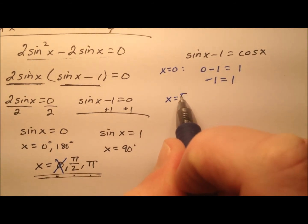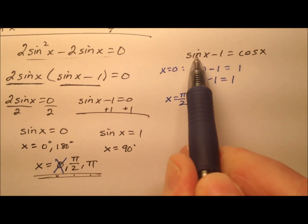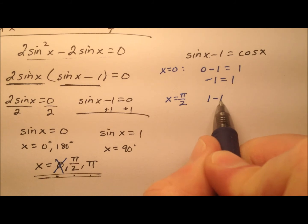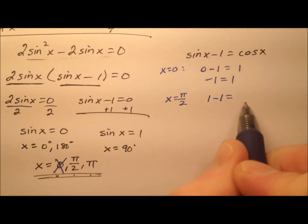How about x equals π over 2? The sine of π over 2? Well, that's 90 degrees, so 1. So 1 minus 1 equals. And the cosine of π over 2 is 0. 0 equals 0. Yeah, so that one's good to go.